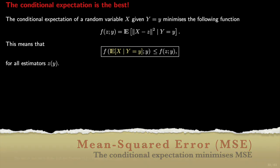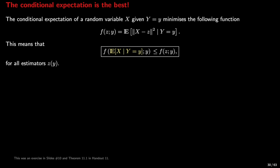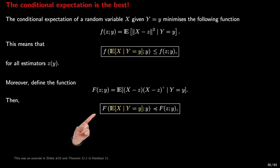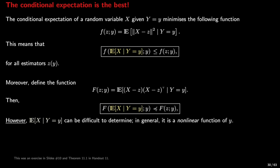In other words, no other estimator — let's say z of y — can attain a lower mean squared error compared to the conditional expectation of x, given that y equals little y. We can prove a stronger property: define this matrix-valued metric, where f of z with parameter y is the conditional covariance matrix of the estimator error given that y equals little y. Then the conditional expectation satisfies this property. However, the challenge is that the conditional expectation can be difficult to determine. In general, without a normality assumption, it is a non-linear function of y, and it can be very challenging computationally, because conditional expectations are integrals.